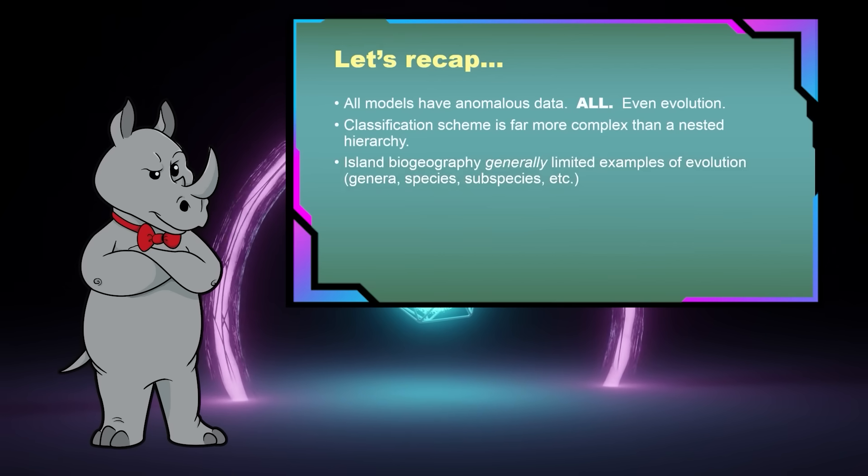I also noted that island biogeography, the thing that really clinched evolution in the mind of Darwin, is generally, and I mean generally, not always, but generally limited to examples of evolution that are limited. Right. So things like unique genera, unique species, unique subspecies are on islands, even though there are some islands that have been around for millions of years.